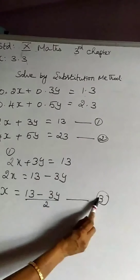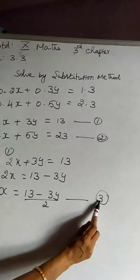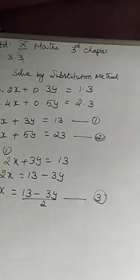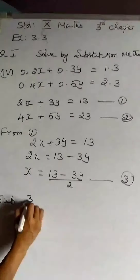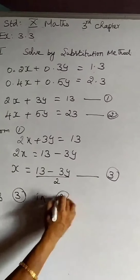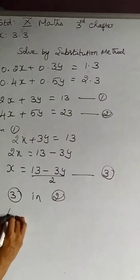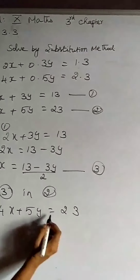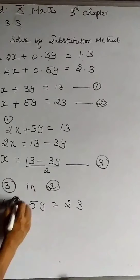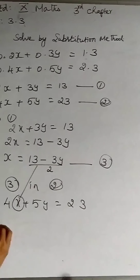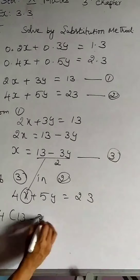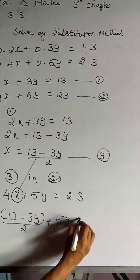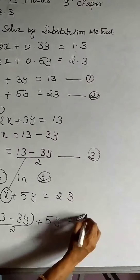The second equation is missing from what we have used so far. Therefore this third equation is going to be substituted in the second equation. Substituting third in second: copying the second equation, 4x + 5y = 23. In the place of x we are going to substitute the third equation, giving 4 × (13 − 3y)/2 + 5y = 23.